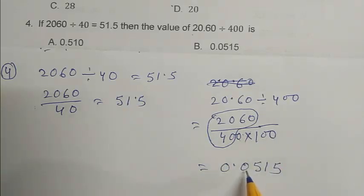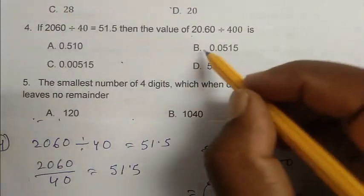We have to move the point 3 place. So it's become 0.0515. So B is the right answer.